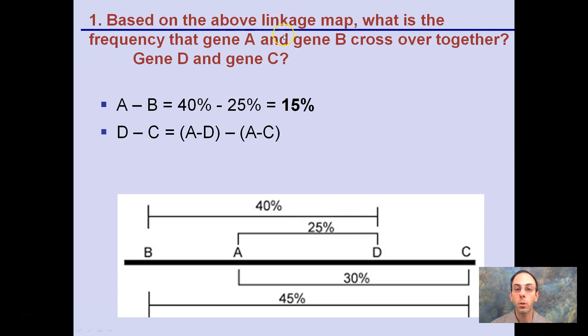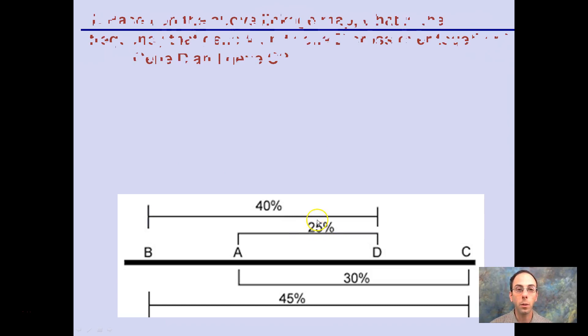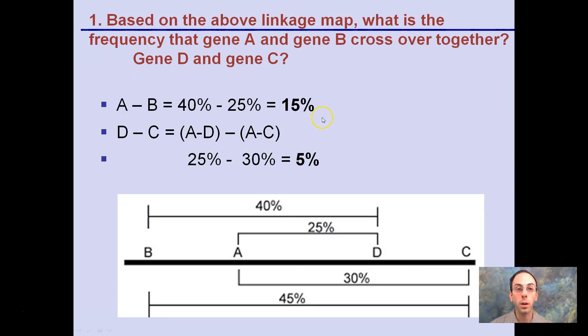You can pause it and I'm going to give you the answers. So for the first one here, based on the above linkage map, what are the frequencies of A and B crossing over? Here's A, here's B. 40% minus 25% would give you the distance here, and that would be 15%. And then D to C. So here's D and C. We want to figure out what this distance is. If you take A and D and we subtract A to C, 25% minus 30%, this distance is 5%.